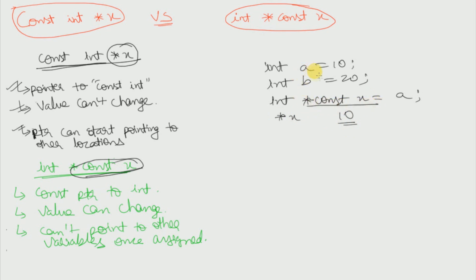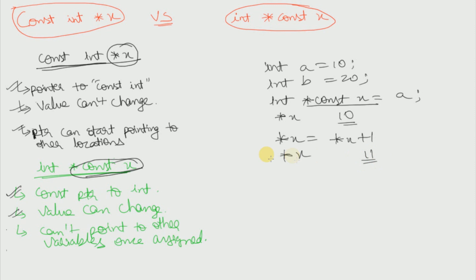A constant pointer points to an integer. The second point is that the value can change: if we write `*x = *x + 1` and print `*x` again, then the value will become 11. Unlike `const int *x`, in this case we can change the value.